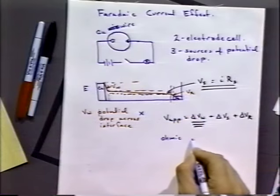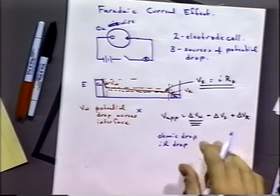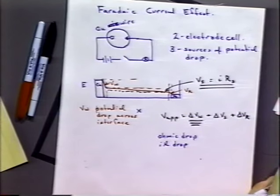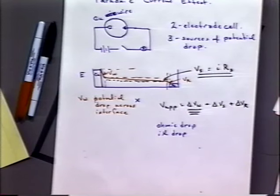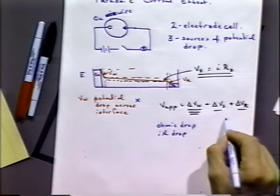With Faradaic current, now that we have the possibility of a constant current flowing through our system — the current due to the reaction — we have to consider the fact that that current has to flow through the solution phase. Since the solution phase has a resistance to it, there will always be this IR drop, also called ohmic drop. Both terms refer to current flow through the solution resistance; it's ohmic, referring to Ohm's law, which is the relationship between current, potential, and resistance.